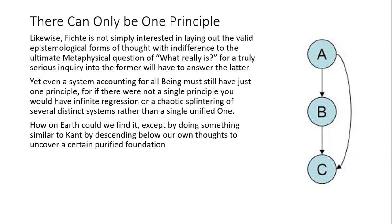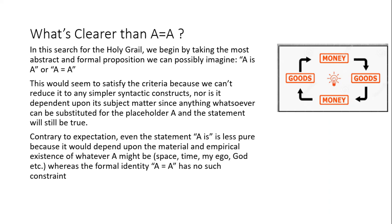In this search for the Holy Grail, Fichte begins by taking the most abstract and formal proposition he could possibly imagine, which is, of course, A is A, or A equals A. This would seem to satisfy the criteria because we cannot actually reduce it to any simpler syntactic constructs, nor is it dependent upon its subject matter since anything whatsoever could be substituted for the placeholder A and the statement would still be true. Contrary to expectation, even the statement 'A is,' although seemingly more simple, is actually less pure because it still depends upon the material and empirical existence of whatever A might happen to be — in that statement, you really are affirming that something exists, whether that be space, time, my ego, God, or whatever — whereas the formal identity A equals A has no such constraint.